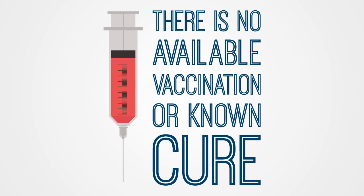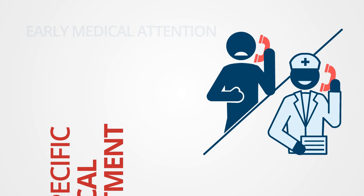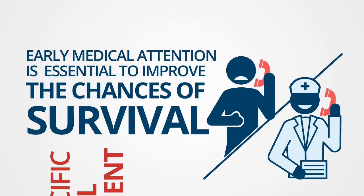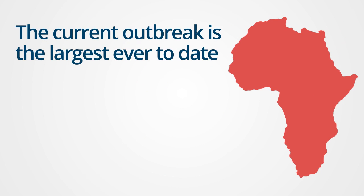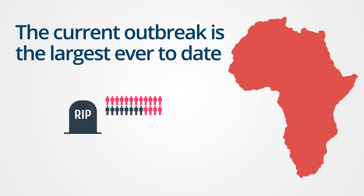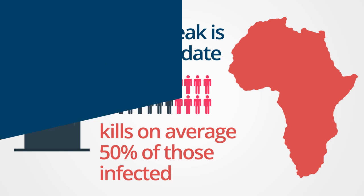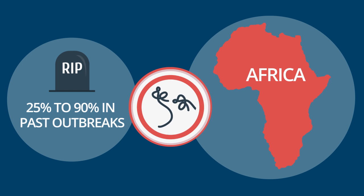There is no publicly available vaccine for Ebola as of yet, and there is no specific medical treatment. However, early medical attention is essential to improve the chances of survival. Outbreaks of Ebola have been occurring in Africa over the past 40 years. The current outbreak is the largest ever to date, and it kills on average 50% of those infected. Case fatality rates have varied from 25% to 90% in past outbreaks.